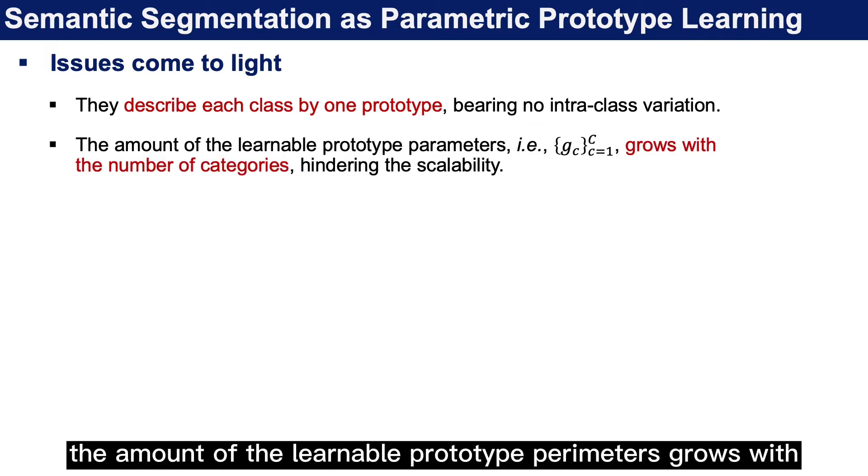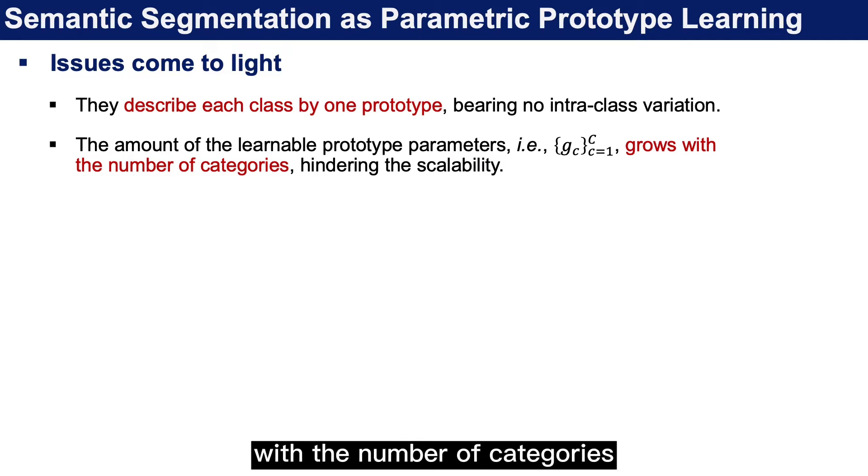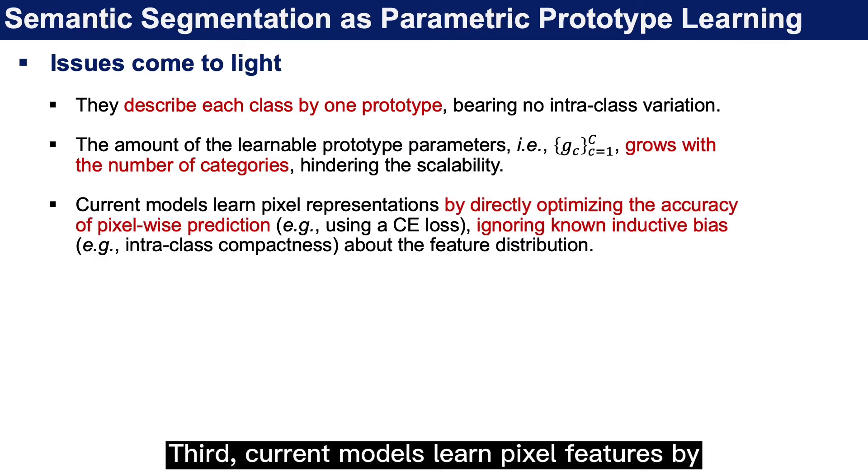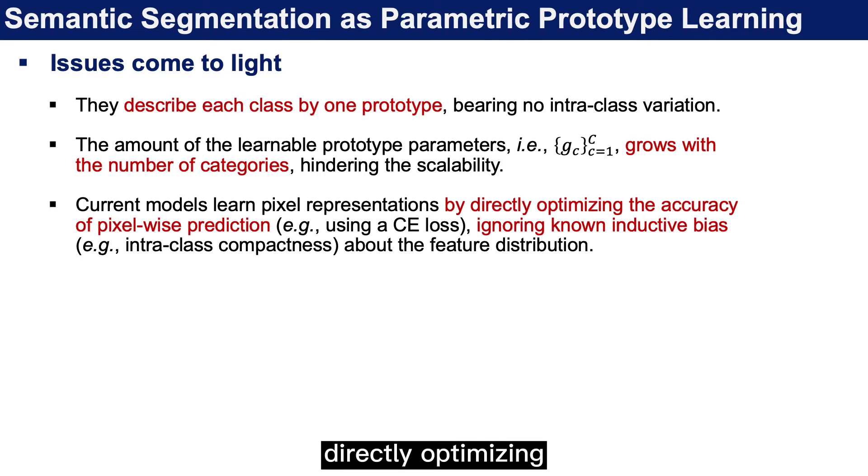Second, the amount of learnable prototype parameters grows with the number of categories, hindering scalability. Third, current models learn pixel features by directly optimizing segmentation accuracy, for example using a cross-entropy loss, but they ignore known inductive bias about the feature distribution.